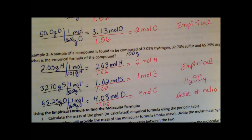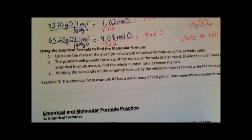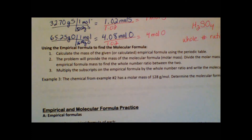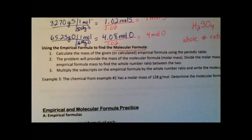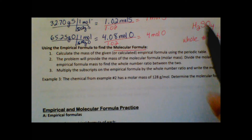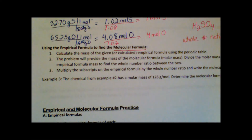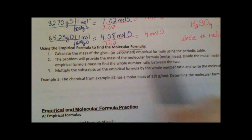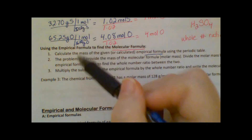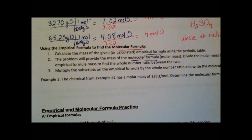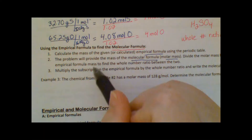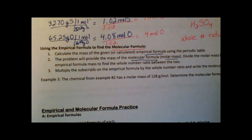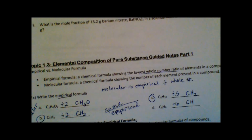Now we can take this further to find the molecular formula. To do that, we calculate the molar mass of the empirical formula using the periodic table. The problem will provide the molar mass of the molecular formula. We divide the molecular formula's molar mass by the empirical formula's mass to find the whole number ratio. We're essentially reversing the simplification to get back to the molecular formula.